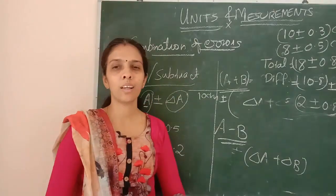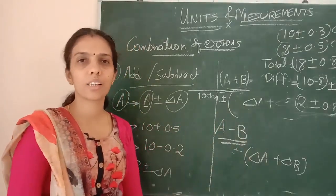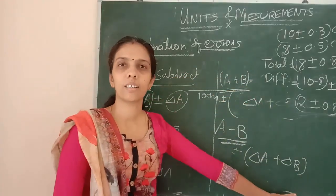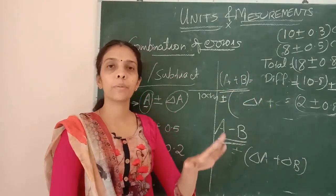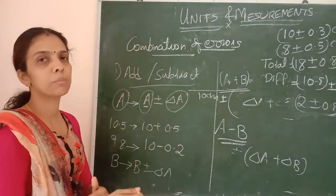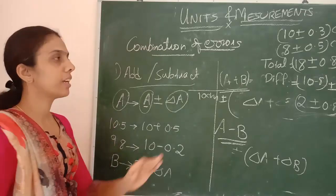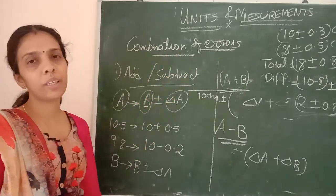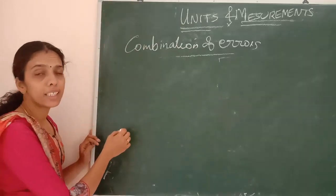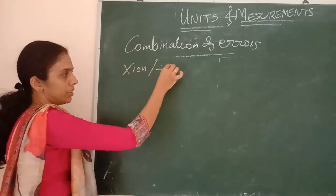The derivation is there in the textbook — it is a simple derivation and easy to understand. The key content is: if we are adding or subtracting the terms, errors always will add up. Next is multiplication or division.